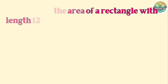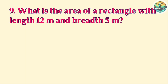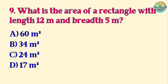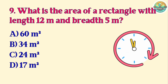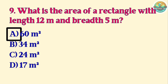Question 9. What is the area of a rectangle with length 12 m and breadth 5 m? A. 60 m². B. 34 m². C. 24 m². D. 17 m². Correct answer is A. 60 m².